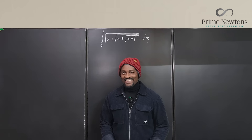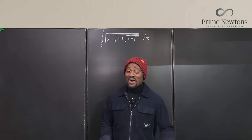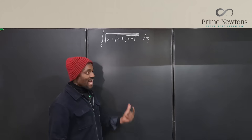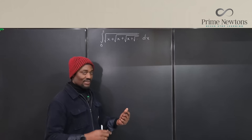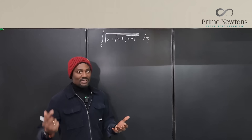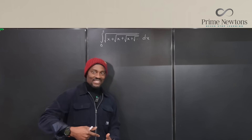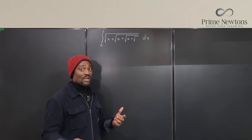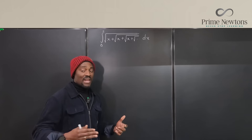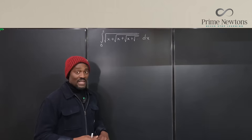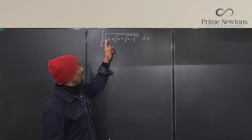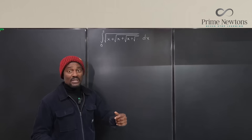Welcome to another video. I'm going to do some calculus today — it's been a while. We have a nested radical of x plus the nested radical of x plus the nested radical of x, continuing infinitely. We need to integrate this nested radical from 0 to 2 with respect to x.